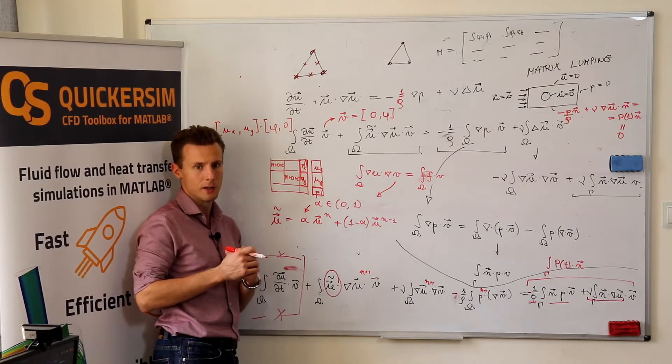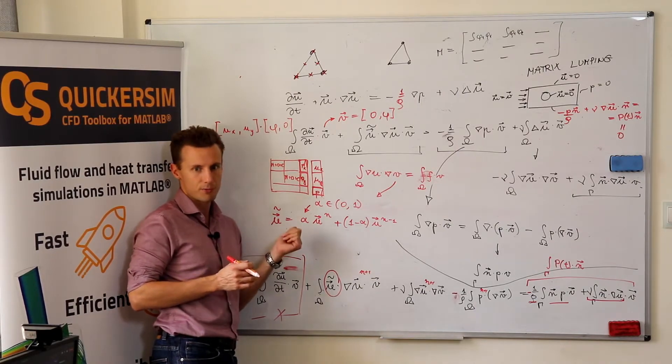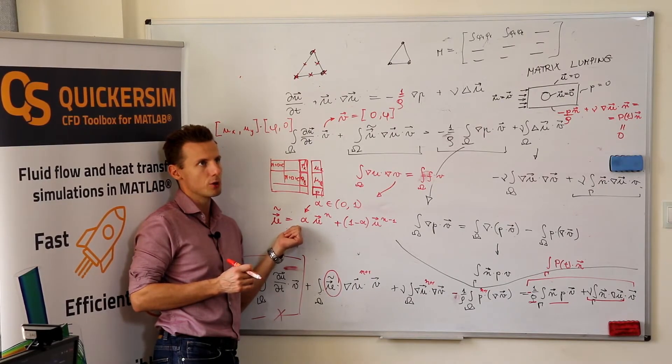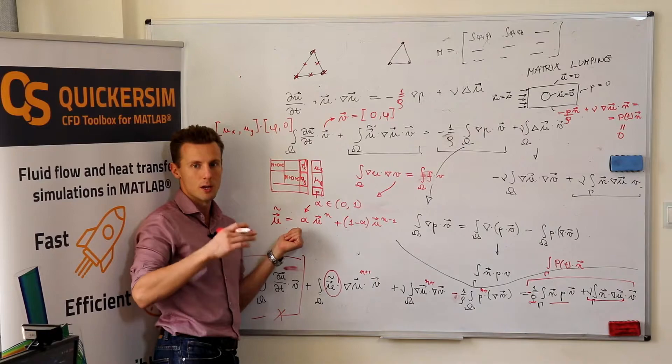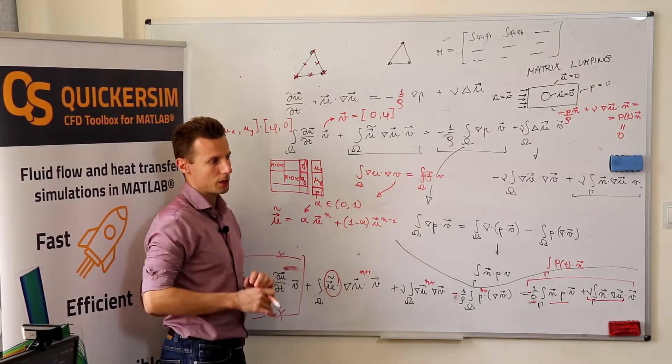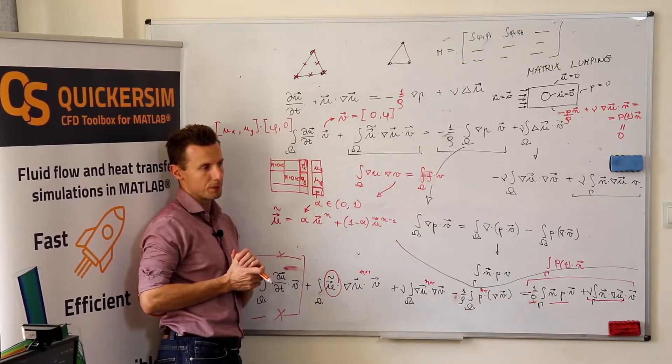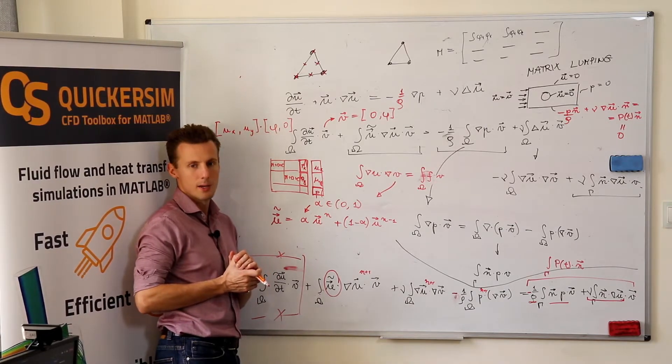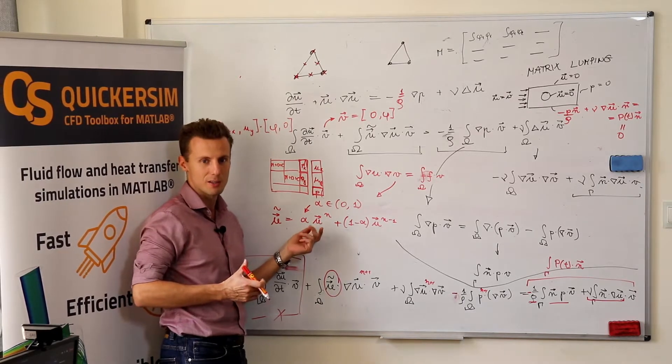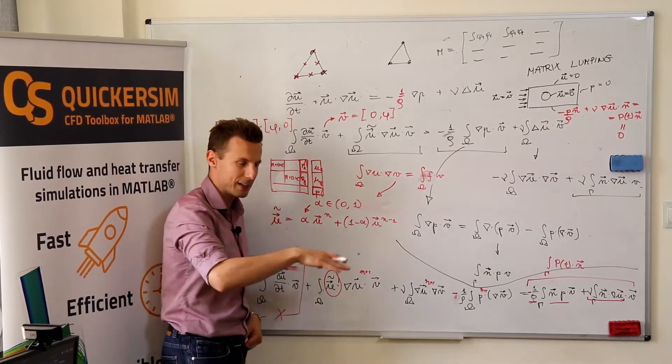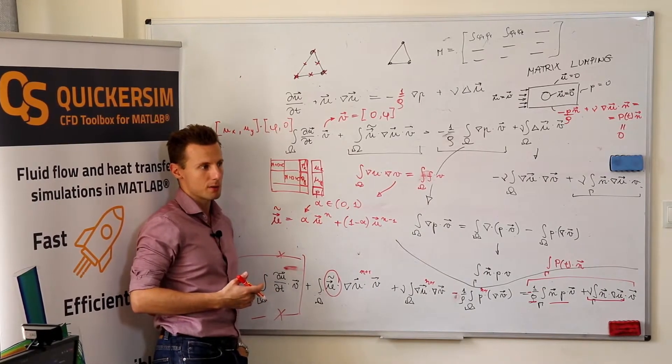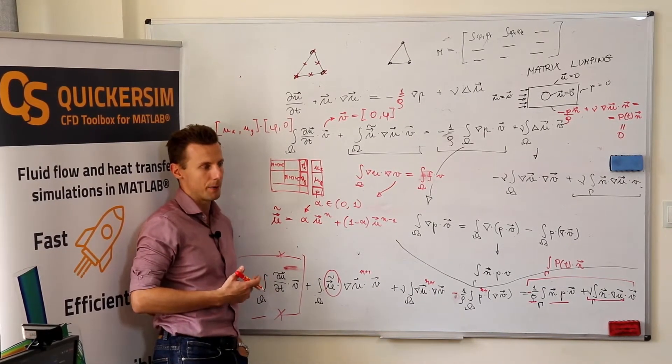And finally, to have quicker convergence because if, in many cases, you apply under relaxation because if you don't apply under relaxation, you get many oscillations in your iterative process. So, if you slow down the variation of the convective velocity, you may get eventually much quicker convergence than you'd have without under relaxation.